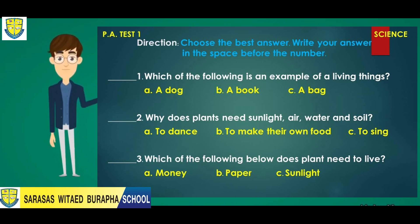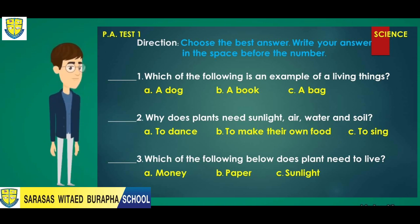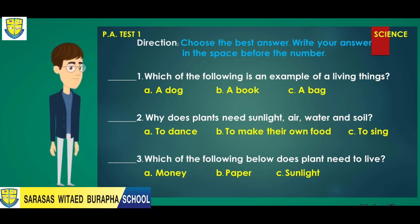Number three: Which of the following does a plant need to live? A. Money. B. Paper. Or C. Sunlight.